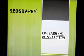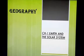The eight planets are Mercury, Venus, Earth, Mars, Jupiter, Saturn, Uranus and Neptune. Jupiter is the biggest and Mercury is the smallest planet in the solar system.